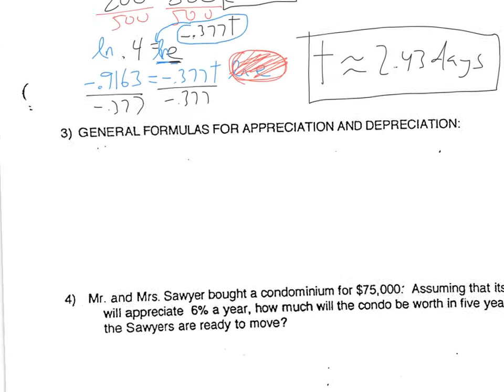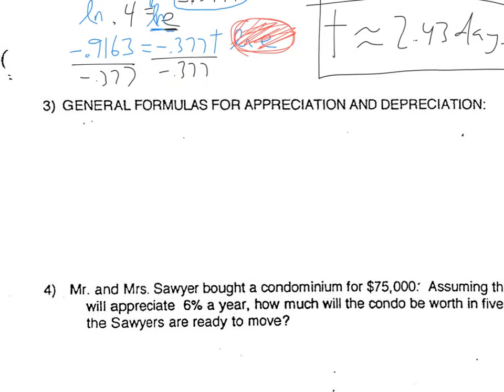Two other new formulas are general formulas for appreciation and depreciation. Things that are appreciating increase in value over time — you usually think of homes or old baseball cards whose values grow. If you think of depreciation, things that decrease in value over time — you buy a car and over time that car is going to decrease in value. That's what it means to appreciate and depreciate.